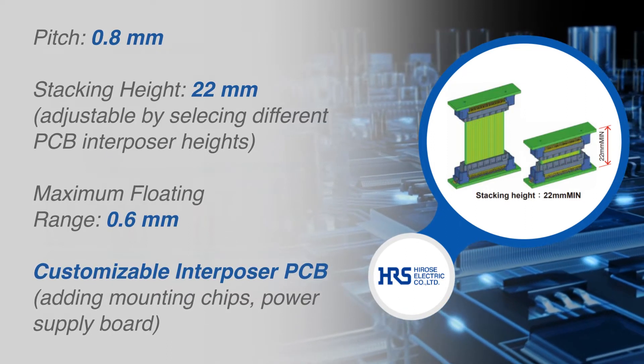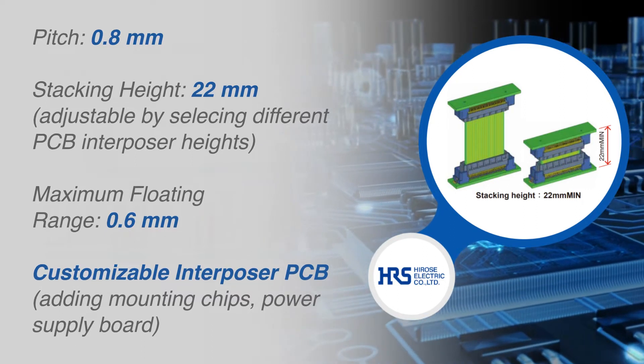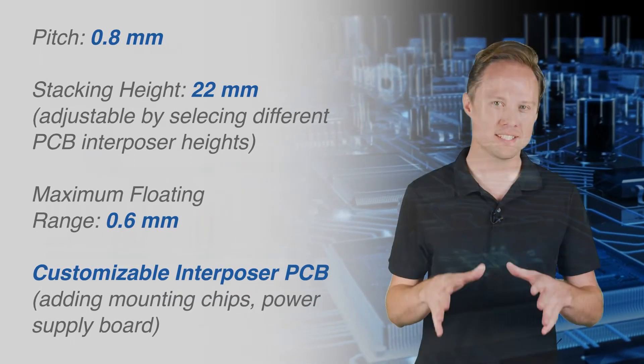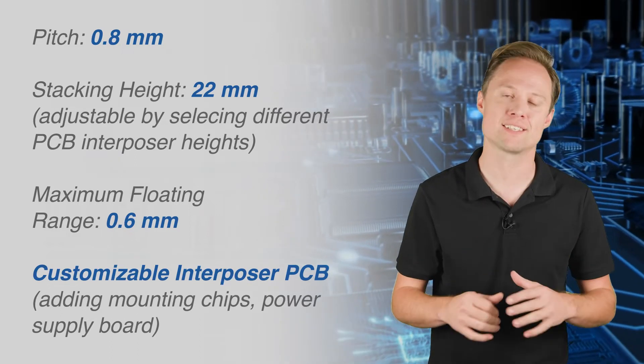Floating range of plus or minus 1.2mm is possible by using two FX27 connectors, double floating. In addition, the interposer PCB can have various chip components mounted to have ultimate design flexibility.